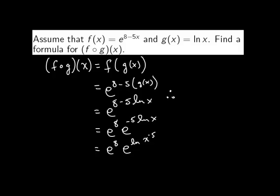Therefore, f composed of g of x equals e to the 8 times x to the negative 5th, or simply e to the 8 over x to the 5th.